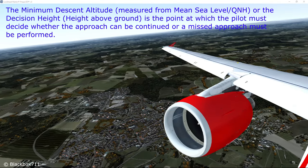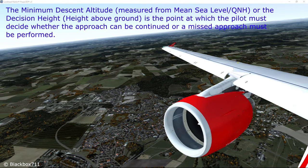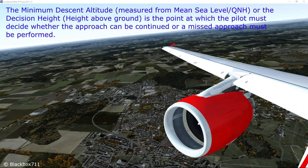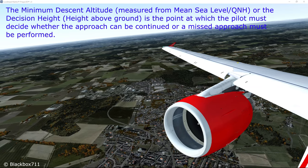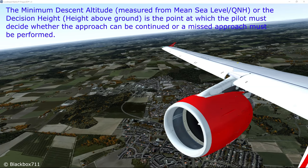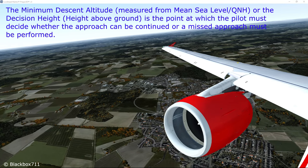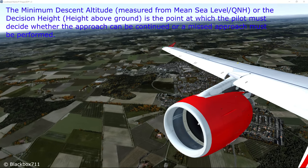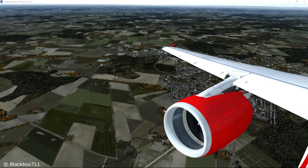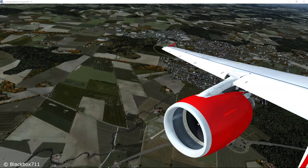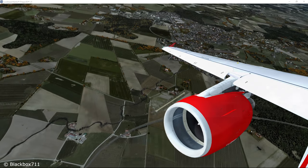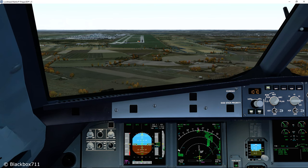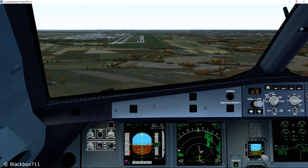The minimum descent altitude, which is measured from mean sea level and referenced by QNH, or the decision height, height above ground, is the point at which the pilot must decide whether the approach can be continued or a missed approach must be performed. Let's first have a look at the criteria which determine whether or not we can continue the approach or if we have to do a go-around.